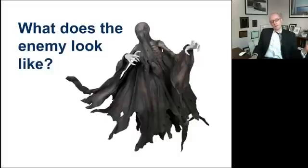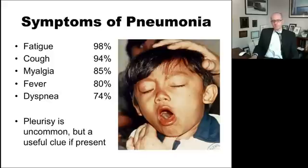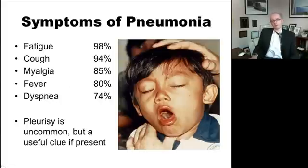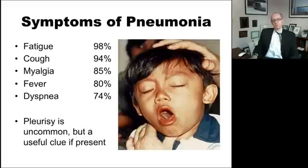So one of these things happens and you get pneumonia. What does it look like? The symptoms are actually kind of diffuse. The most common ones that should trigger concern are fatigue, cough, myalgia, fever, and dyspnea. Cough and fever are the cardinal ones, but a lot of these symptoms are things you can get from other conditions, so they're not super specific. Pleurisy — pain if you take a deep breath — is really useful and much more specific, but it's also uncommon.